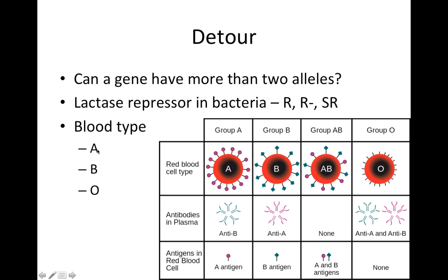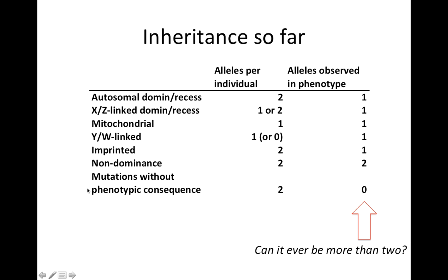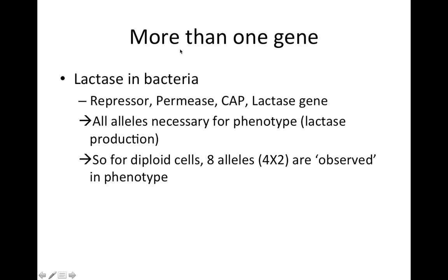So overall, we can clearly see that we can have more than two alleles of the same gene. But that's actually not what I'm talking about here, because we're talking about alleles in an individual, so the most that's going to be is two. So then if I ask, can we have more than two alleles observed in the phenotype, it sounds kind of like a trick question. And that can only be the case if we have more than one gene — we could have two alleles at one gene, two alleles at another gene, maybe two alleles at the next gene.